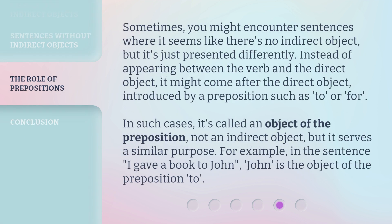Sometimes you might encounter sentences where it seems like there's no indirect object, but it's just presented differently. Instead of appearing between the verb and the direct object, it might come after the direct object, introduced by a preposition such as 'to' or 'for.' In such cases, it's called an object of the preposition, not an indirect object, but it serves a similar purpose. For example, in the sentence 'I gave a book to John,' John is the object of the preposition 'to.'